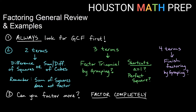So two terms remaining could be one of those. If you have three terms remaining after you pull out the greatest common factor, you're probably factoring a trinomial. We've done all of our trinomial factoring by grouping. We also did an extra video showing a shortcut when a equals one — when the leading coefficient is one, you don't have to do the entire grouping method. You may also recognize some things as perfect square trinomials, which may provide a shortcut as well.